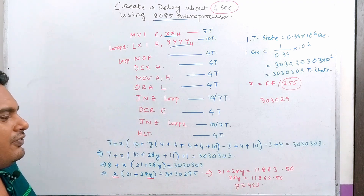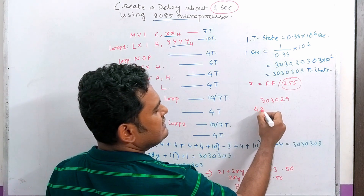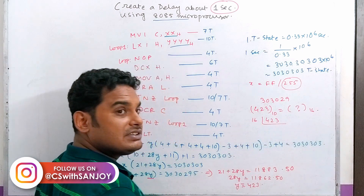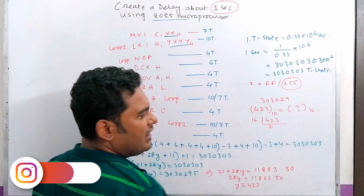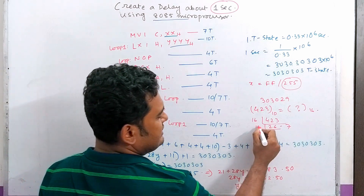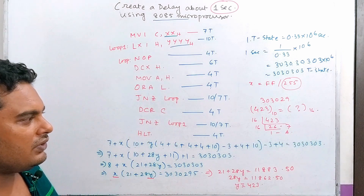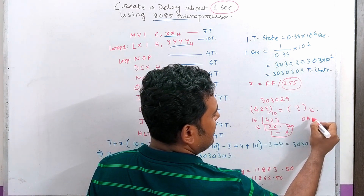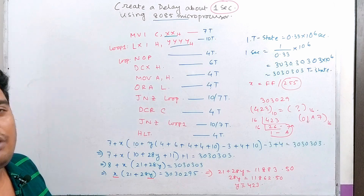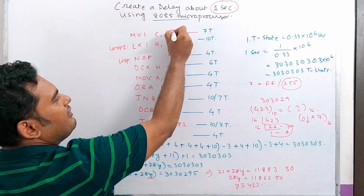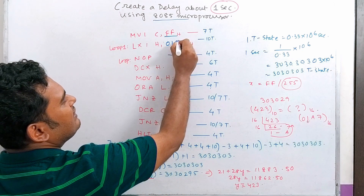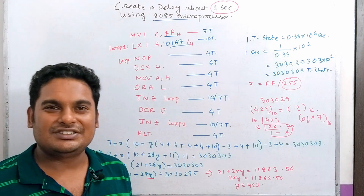Now we convert the decimal number 423 to its corresponding hexadecimal value. 423 divided by 16 gives 26 remainder 7. 26 divided by 16 gives 1 remainder 10, which is A. So 423 decimal equals 01A7 in hexadecimal. Therefore X = FF and Y = 01A7. It is very easy to compute.